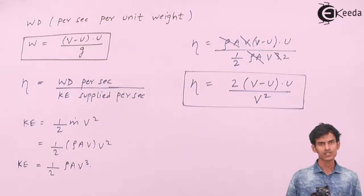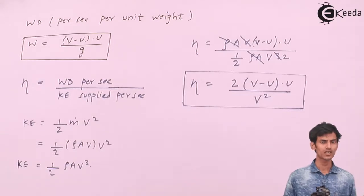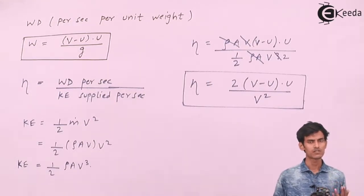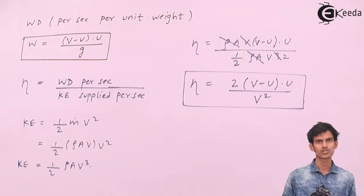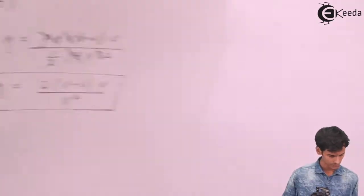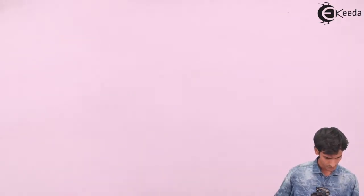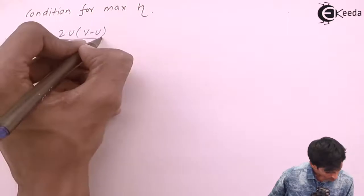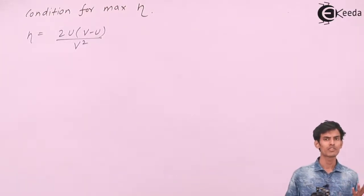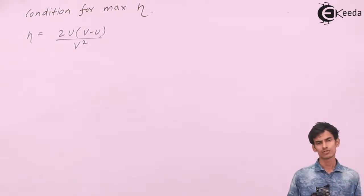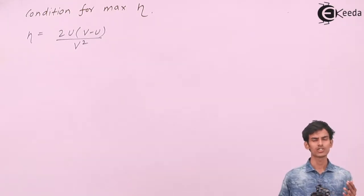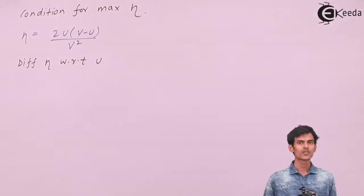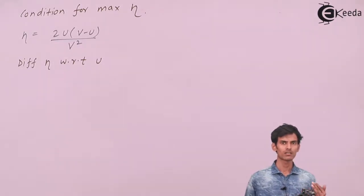Now let's find the relation between the velocity of the plate and the velocity of the jet for maximum efficiency. We are deriving the condition: what should the relation be between the jet velocity and the plate velocity so that efficiency is maximum? To maximize efficiency, differentiate the efficiency with respect to the velocity of the plate, equate it to zero, and get the condition.